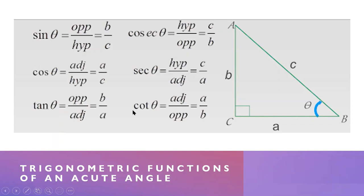The tangent of theta is opposite over adjacent. The opposite is B and the adjacent is A, so tangent B equals B over A. The cosecant of theta is hypotenuse over opposite, so that is C over B. The secant of theta is hypotenuse over adjacent, so the hypotenuse is C and the adjacent is A, giving C over A. And the cotangent of theta is adjacent over opposite, so cotangent B equals A over B.